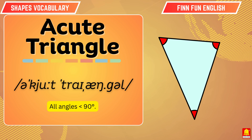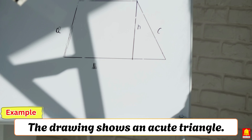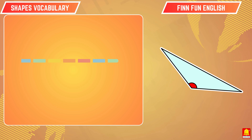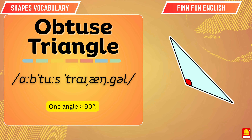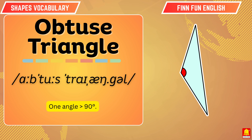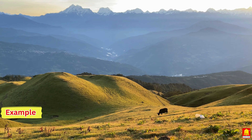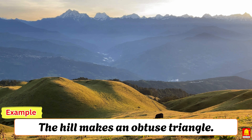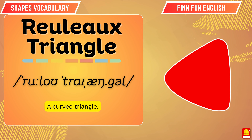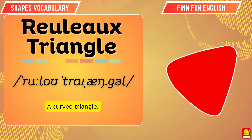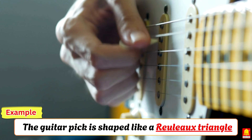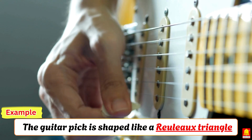Acute triangle. The drawing shows an acute triangle. Obtuse triangle. The hill makes an obtuse triangle. Reuleaux triangle. The guitar pick is shaped like a Reuleaux triangle.